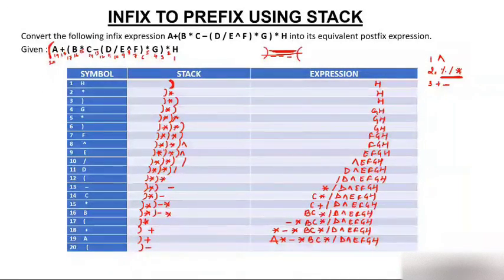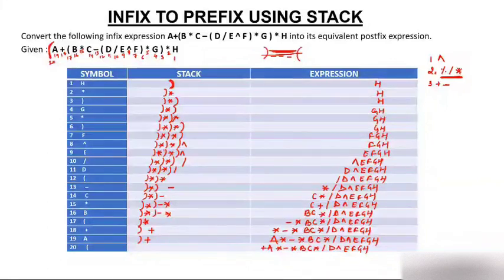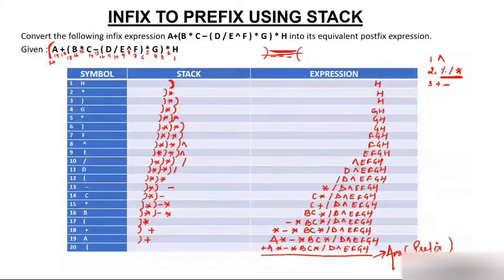Finally, we have the closing bracket with plus in the middle. The plus operator pops to the expression, giving the final prefix result: + a * - * b c * / d ^ e f g h. Both brackets are discarded. The stack should have nothing left over, and the last step of the expression column is the answer — that is the equivalent prefix expression for the given infix expression.